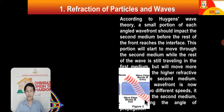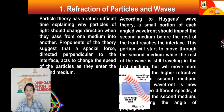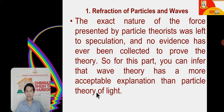How about particle theory? Particle theory has a rather difficult time explaining why particles of light should change direction when passing from one medium to another. Proponents suggest that a special force directed perpendicular to the interface acts to change the speed of particles as they enter the second medium. But they could not explain what force pulls the particles down when they change medium. The exact nature of that force was left to speculation. So for the explanation of refraction, the wave theory had the advantage.